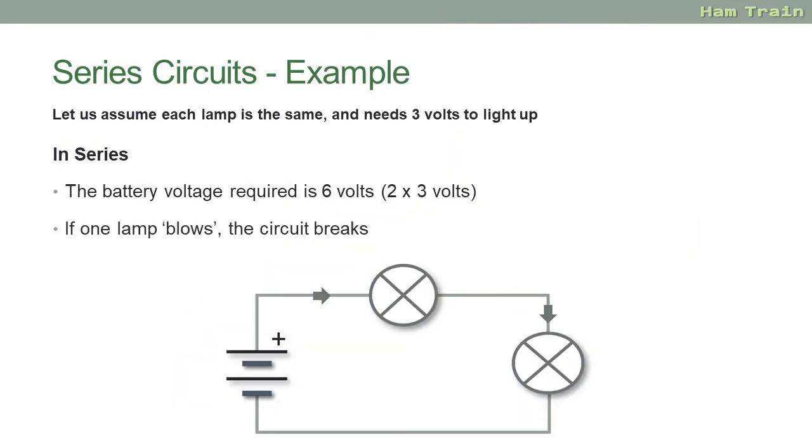Let's take an example. We'll assume here that each lamp is the same and each one needs three volts to light up. In a series circuit, if each bulb needs three volts then you need a total of six volts to power the circuit. So you have your six volt battery, the current flows into one bulb and then into the next. And you'll see from this circuit that if one of the bulbs blows then the entire circuit will break. So that's a standard series circuit through one component and then the next.